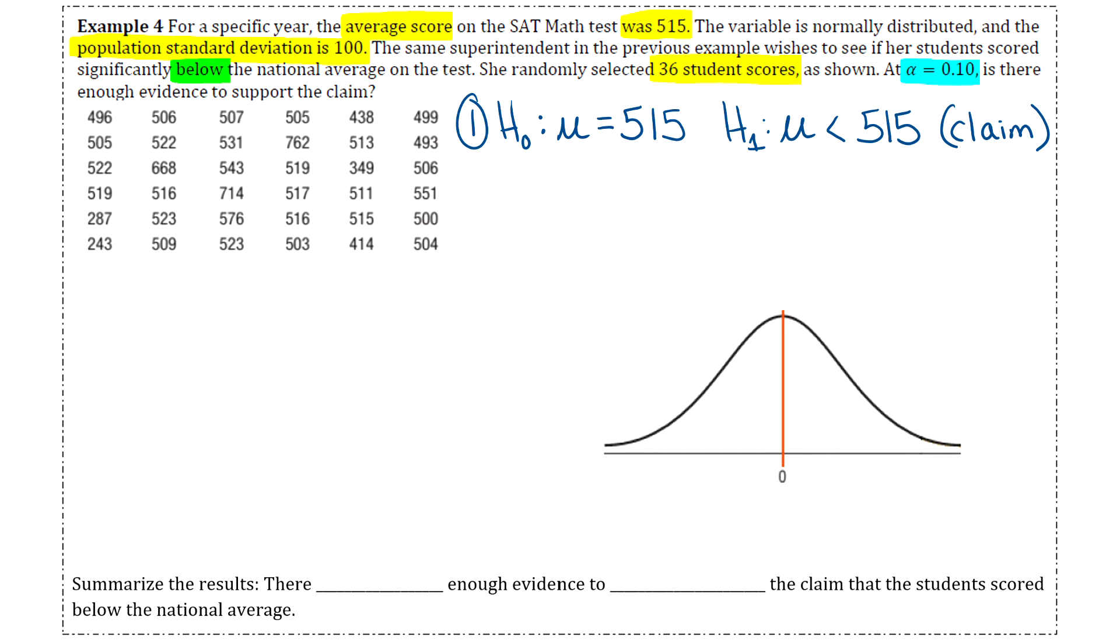Step two is to figure out our critical value. So you just have to use that list of common critical values that I gave you. Identify what alpha is. They'll tell you that in the problem, so 0.1. And then to figure out what tailed test this is, you just have to look at the sign of the alternative hypothesis. So since it's a less than sign, that tells you that it's a left-tailed test. So looking at that list of values, you'll see that the critical value is -1.28.